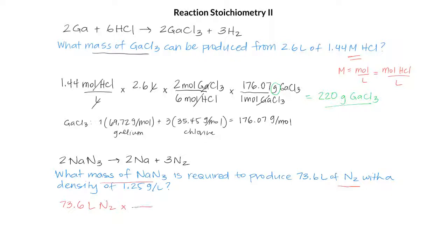We know, given to us in the problem, that N2 has a density of 1.25 grams per liter. That will allow us to cancel out the liters and leave us with grams of N2.